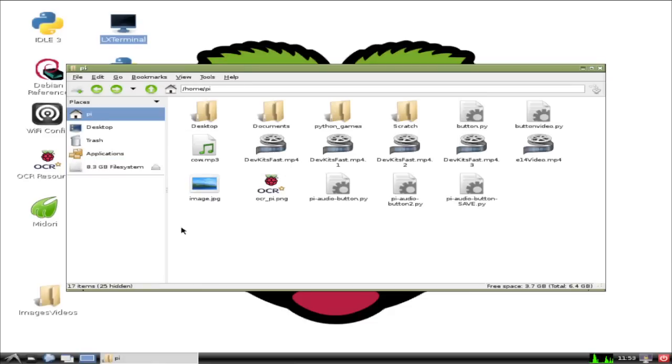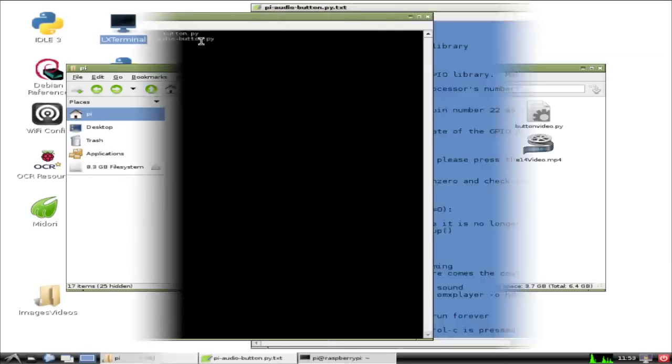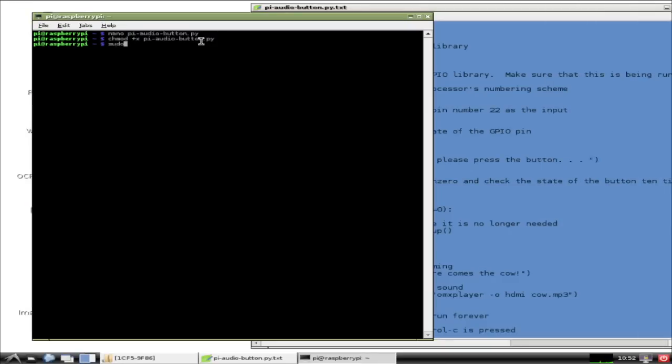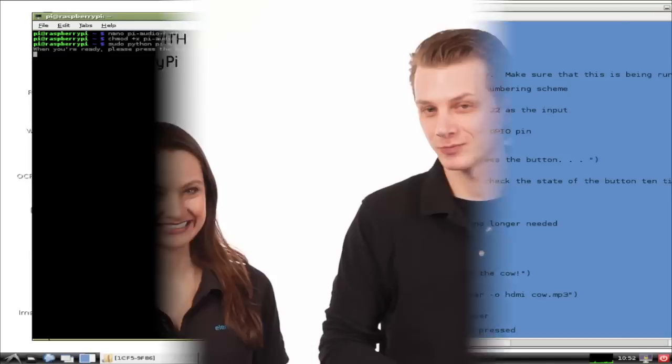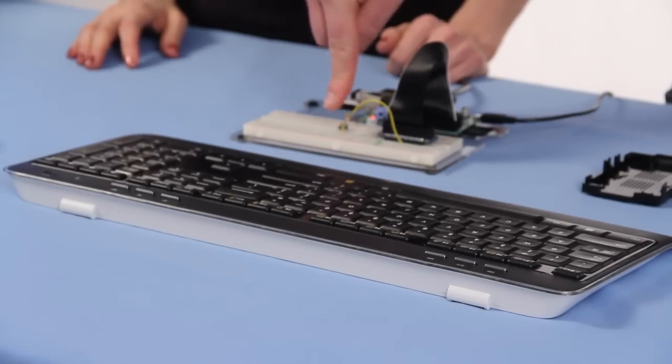We're all set to run the program. In LX terminal, type sudo space python space pi dash audio dash button dot py and press enter. Now when you see the text, when you're ready, please press the button. Press the button that you installed on the breadboard. And just like that, the audio file should play. And that's it. You've created your very first pi project.